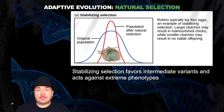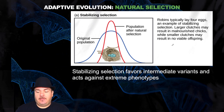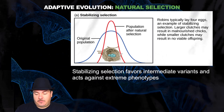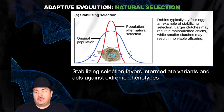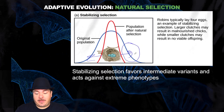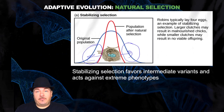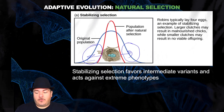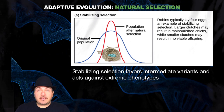The last example is stabilizing selection. Stabilizing selection favors intermediate variants and acts against extreme phenotypes. In this example, robins typically lay four eggs — not more than four or less than four. Why? Because if you get more than four eggs, there's generally not enough food to go around to feed all those babies. If you lay less than four eggs, then just by chance you might not have enough survive to pass on their genes to the next generation. So over time, more and more of the robins tend to lay four eggs because that gives them the best evolutionary advantage. That's called stabilizing selection, which basically stabilizes the middle range, not the two extremes.